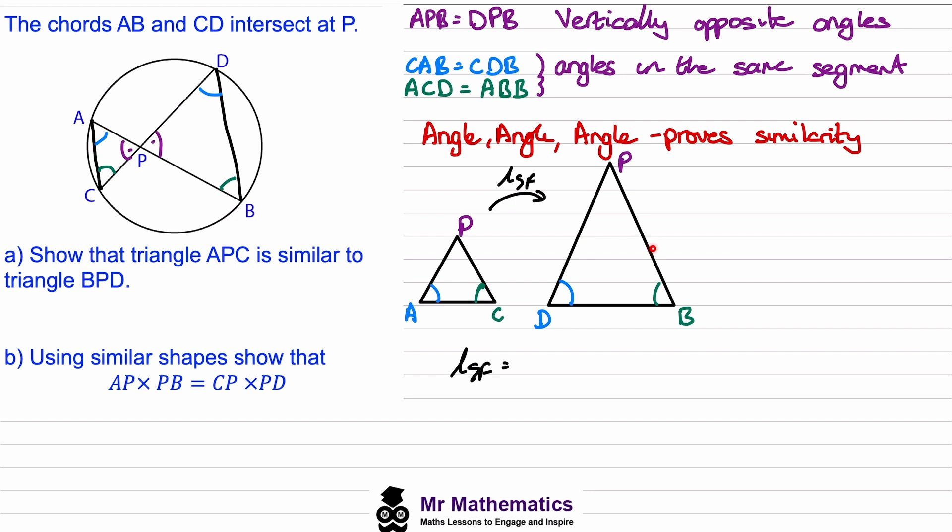by dividing one length by its corresponding length in the other shape. This will be PB divided by CP.